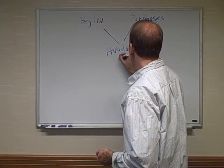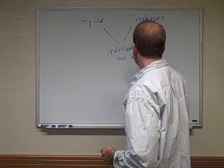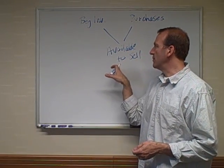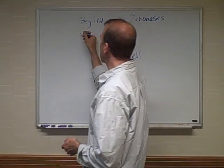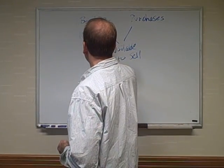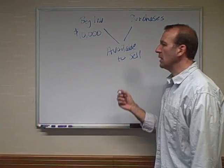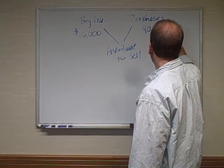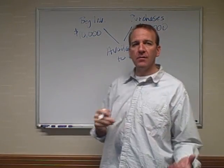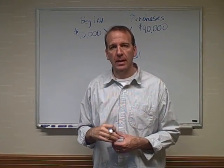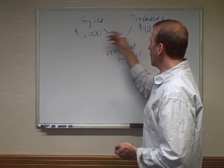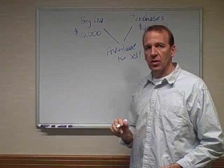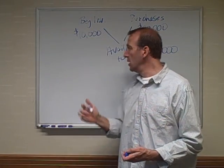Let's say we had beginning inventory of $10,000 worth of items, and during this time period we purchase $90,000 more. This would be $90,000 net of any discounts or returns. So what we have in total available to sell during this time period would be $100,000 worth of inventory.